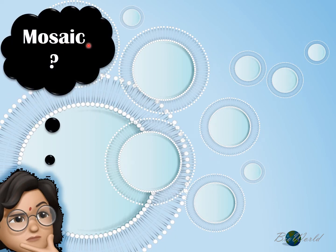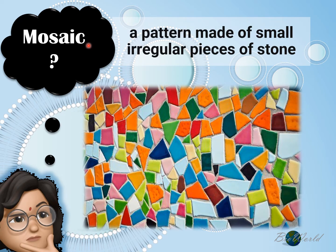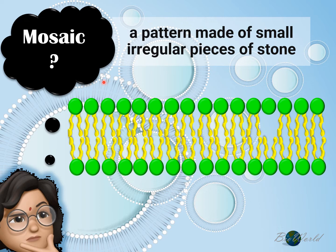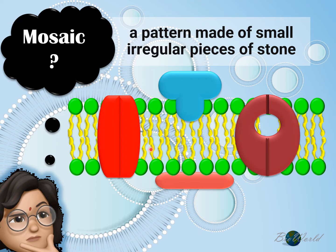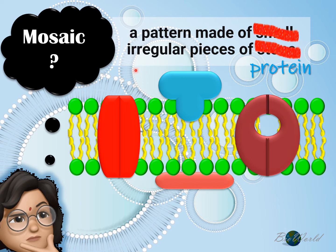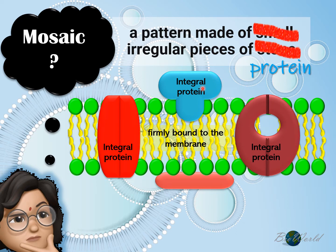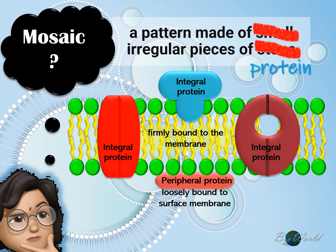Let's now discuss the term mosaic. In English, mosaic is a pattern made up of small irregular pieces of stone. Applying this concept to the plasma membrane: within the bilayer, there are randomly arranged protein molecules. Singer and Nicholson would have used the term mosaic because they could visualize a pattern made up of irregular pieces of proteins embedded within the bilayer. There are what we call integral proteins, which are either completely embedded within the bilayer or partially embedded within the bilayer. These molecules are firmly bound to the membrane. There is also another group of proteins called peripheral proteins, which are only touching the surface of the bilayer and are loosely bound.